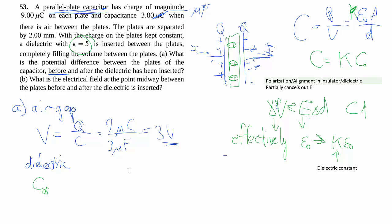So the C with the dielectric constant is the dielectric constant times the original capacitance, so that's 5 times 3 microfarads, giving you 15 microfarads, then your V changes. The micro cancels out, and gives you 0.6 volts.